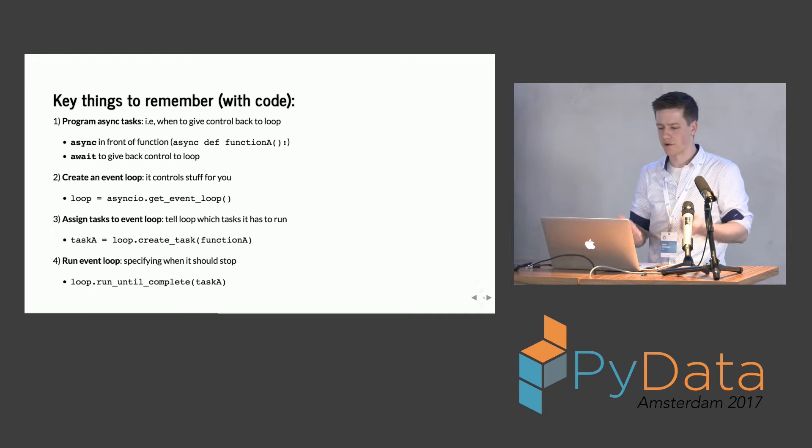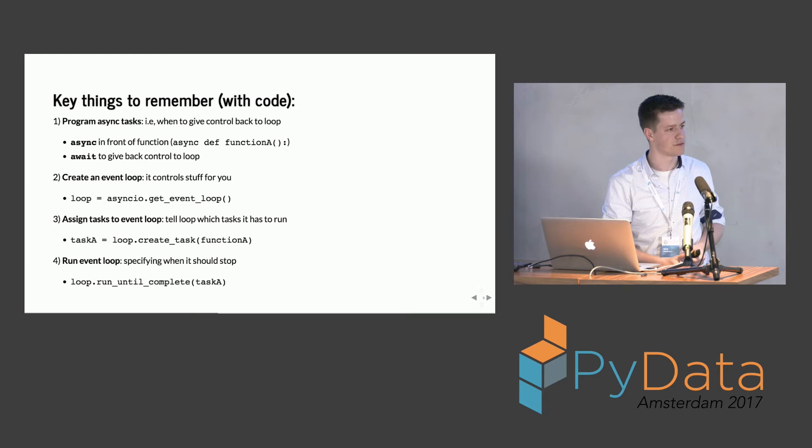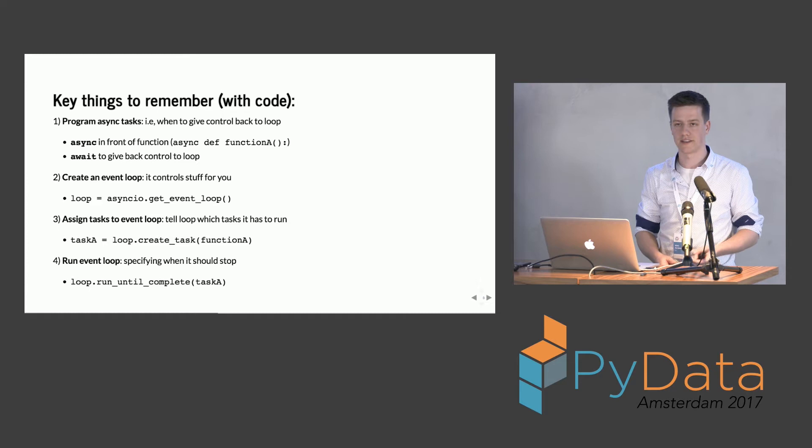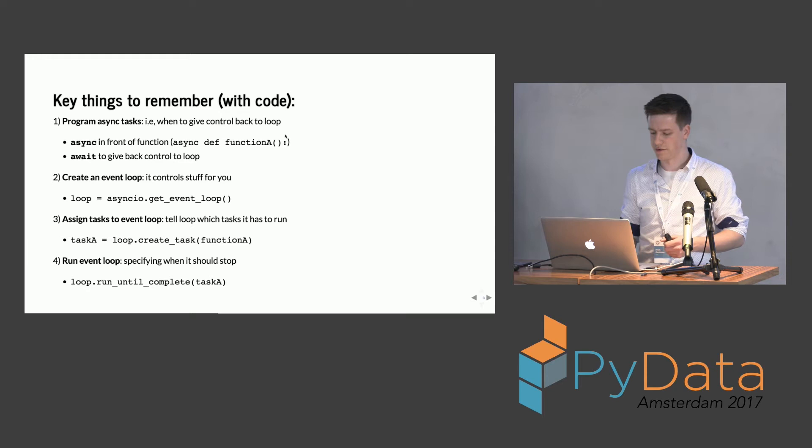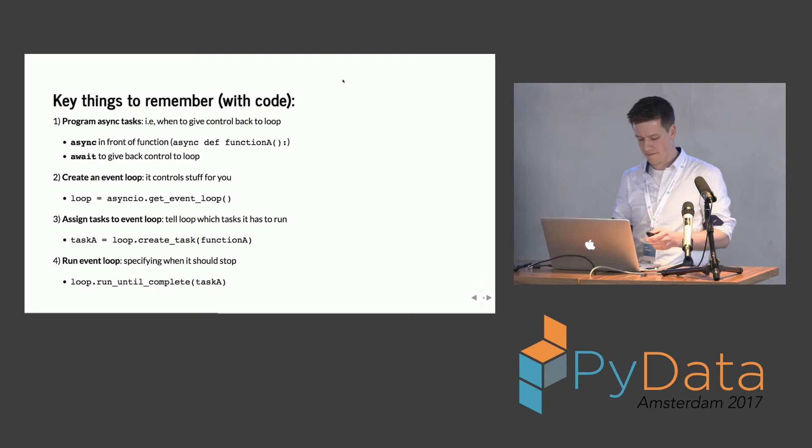Key things to remember: program your tasks asynchronously using async/await — we saw time.sleep doesn't work if you use a synchronous version. Use the async/await keywords. Secondly, create an event loop with asyncio.get_event_loop(). Third, give tasks to the event loop and tell it to start executing. Finally, run the loop and make sure you run until complete for all tasks you want to complete.